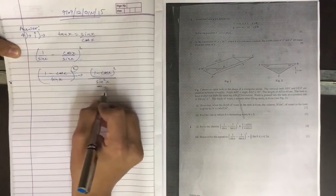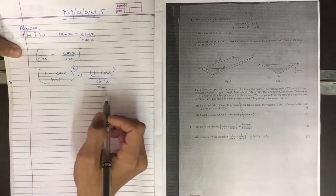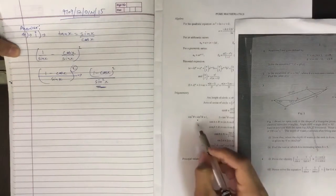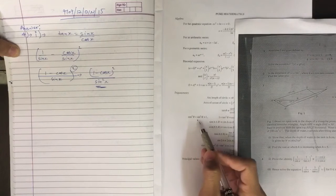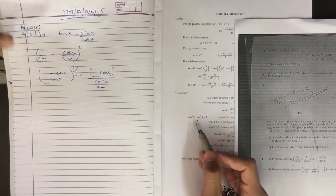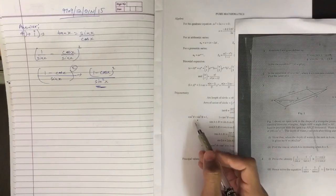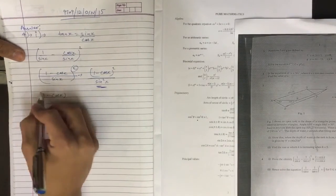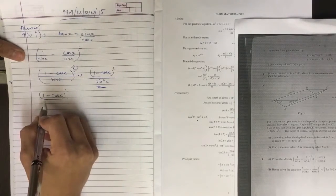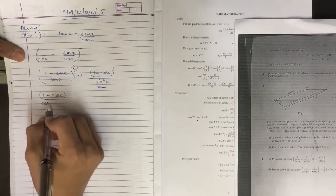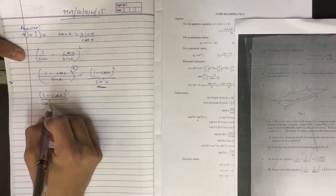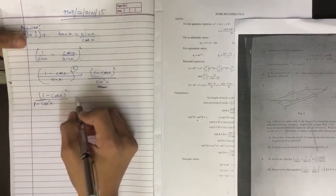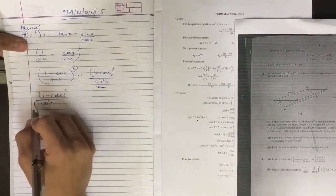Now we need to use some formula of sin squared x to remove it in terms of cos. We have a formula that tells us that sin squared theta equals 1 minus cos squared theta. We need to use this in the equation, so we get 1 minus cos squared x in the denominator.